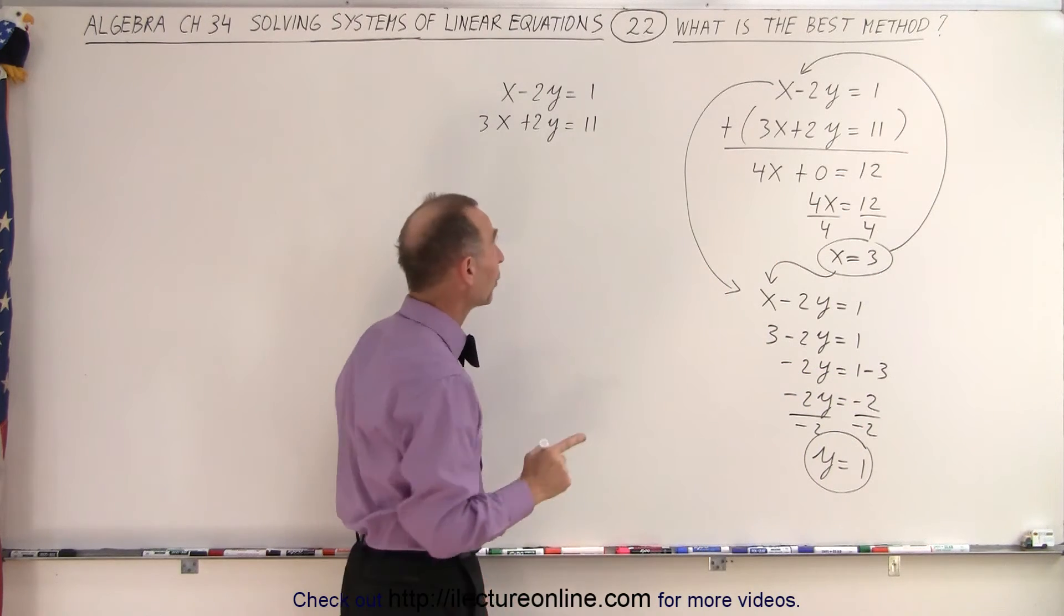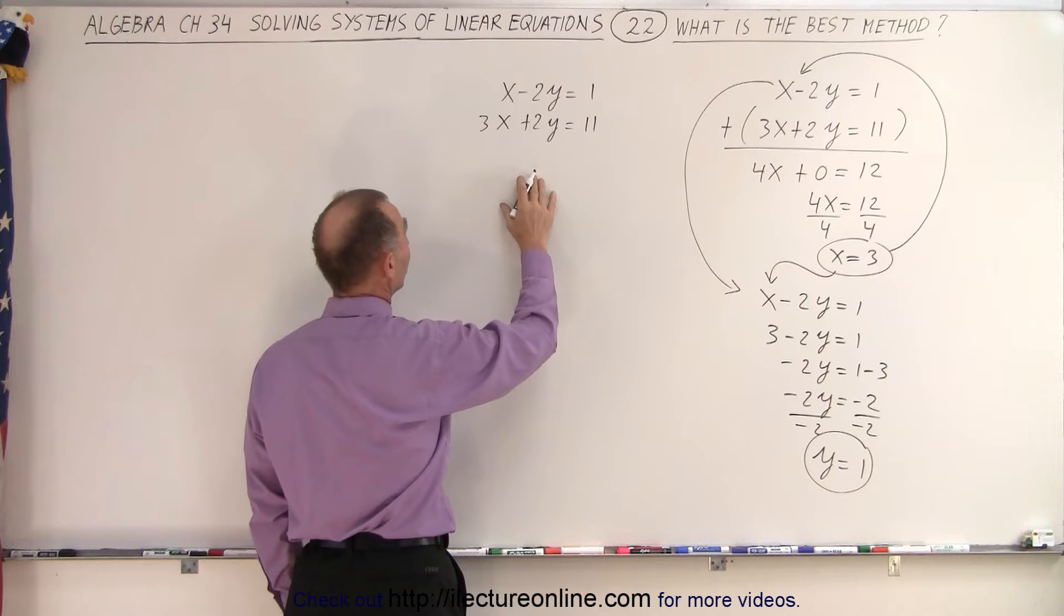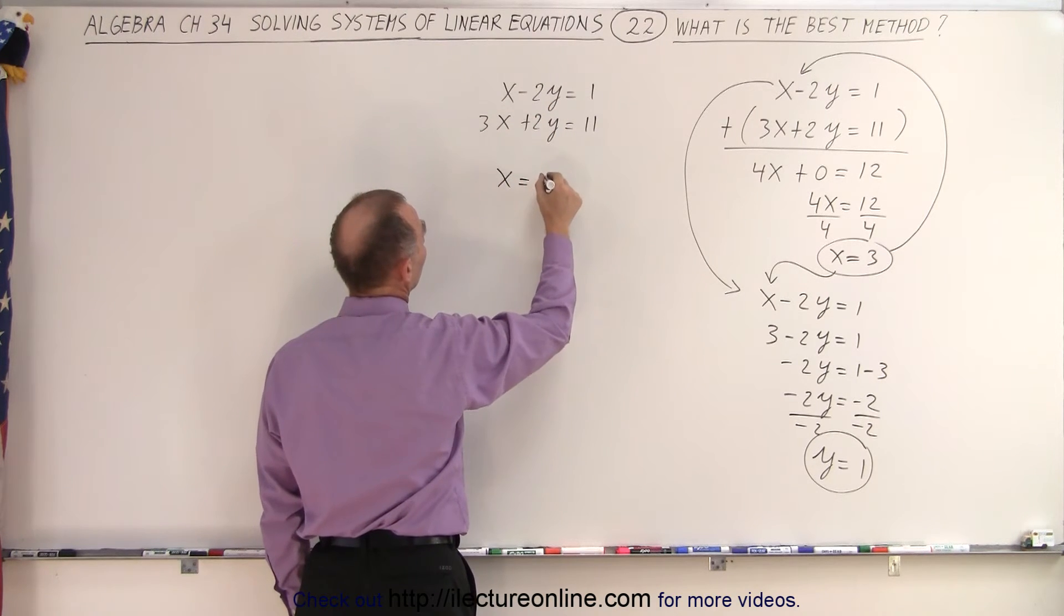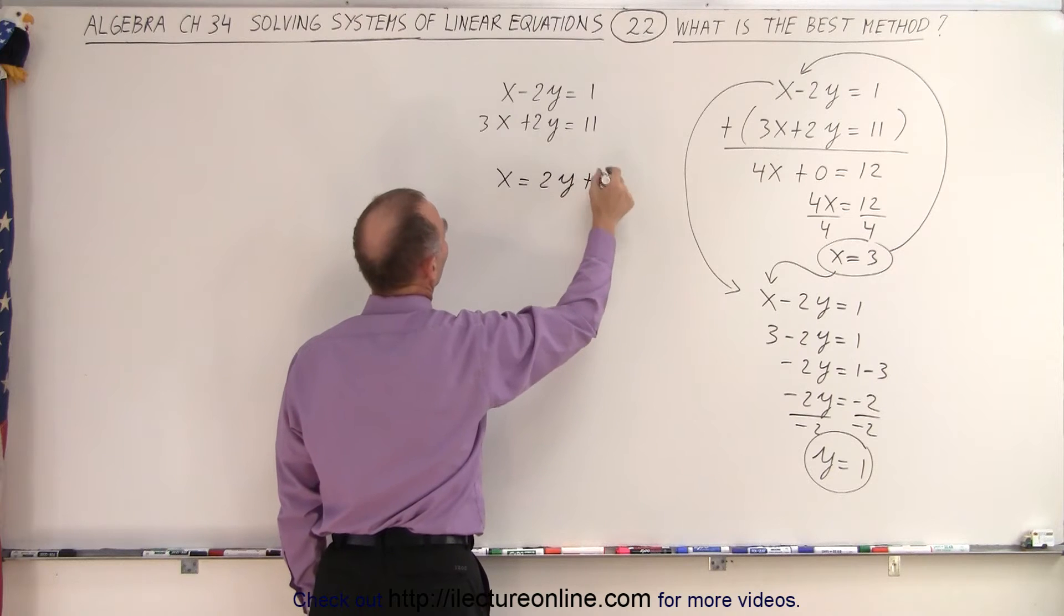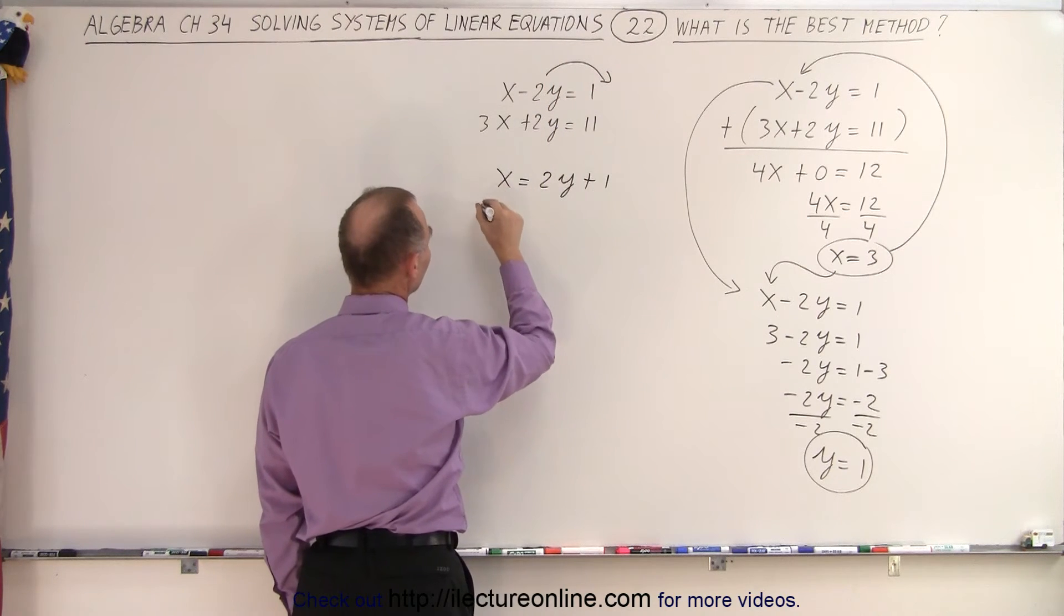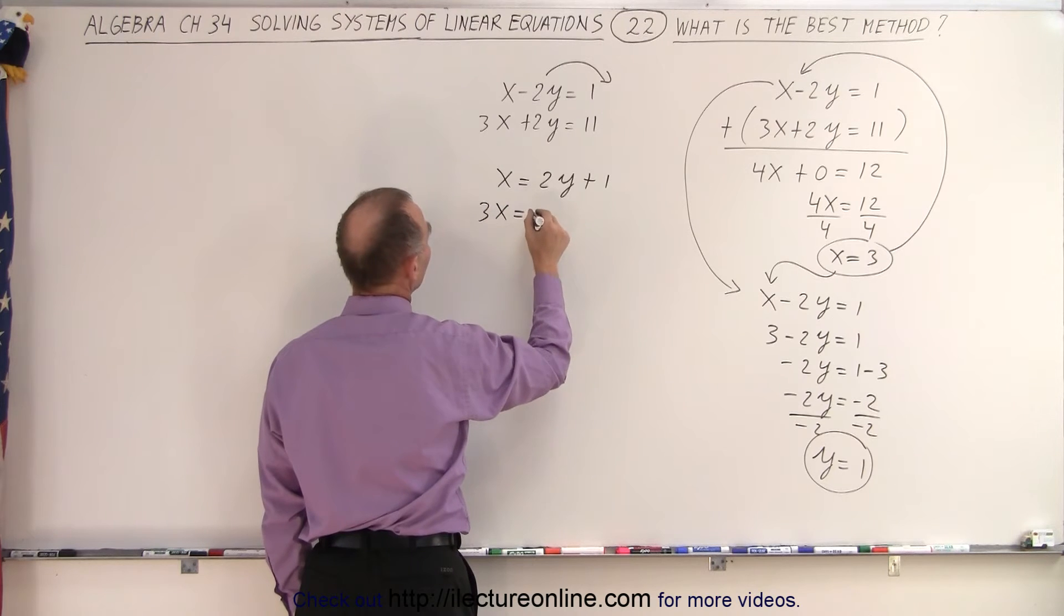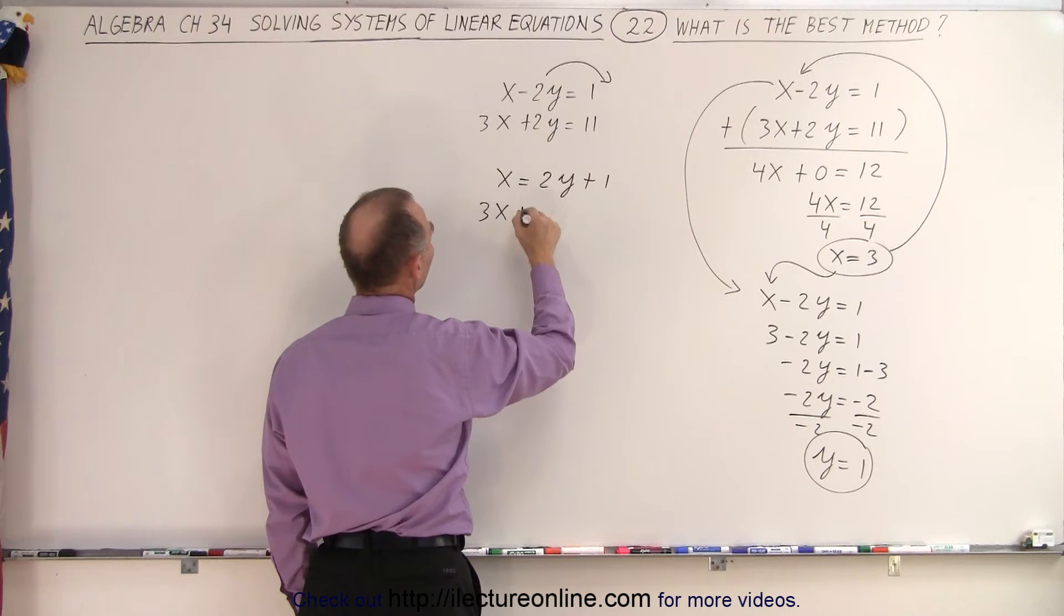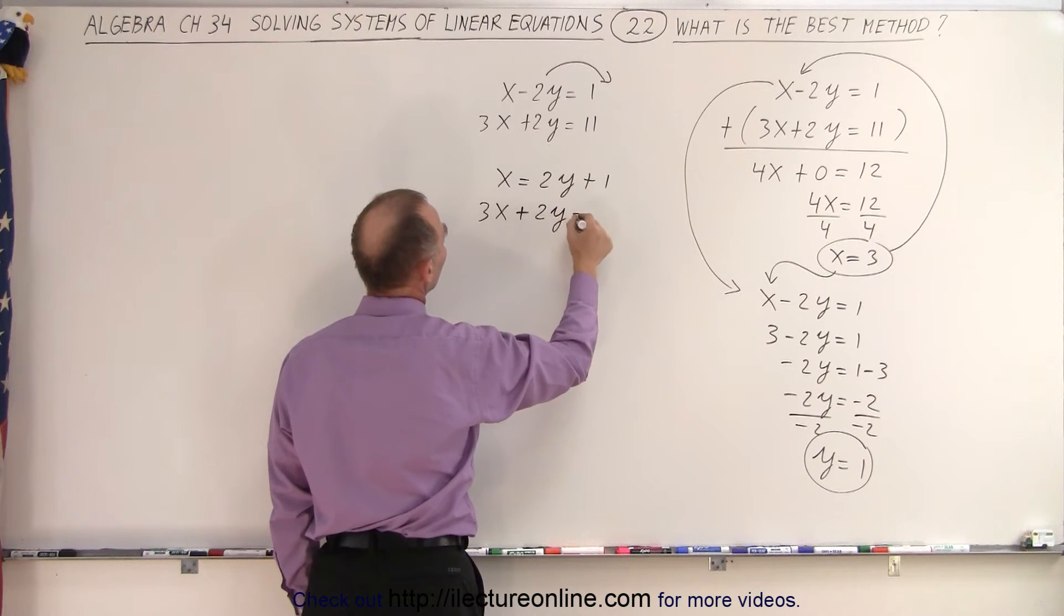So here I'm going to do the method of substitution. I take my first equation. I write as x is equal to 2y plus 1 by moving the 2y to the other side. I repeat the second equation. 3x is equal to, not is equal to, that would be a plus. So that would be plus 2y equals 11.